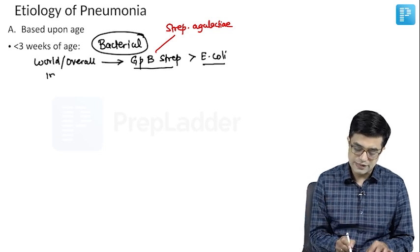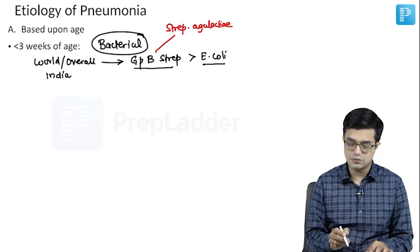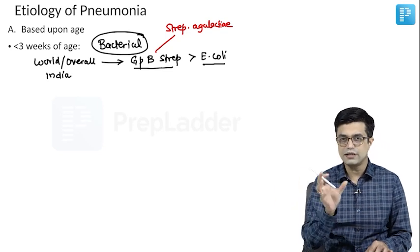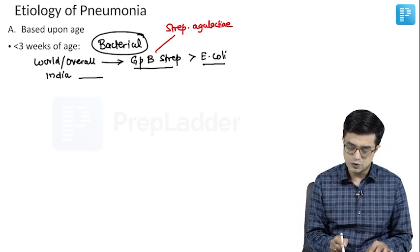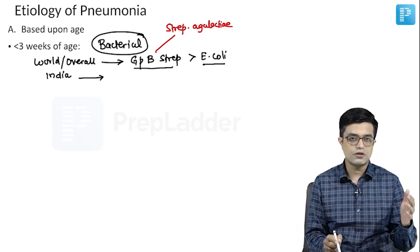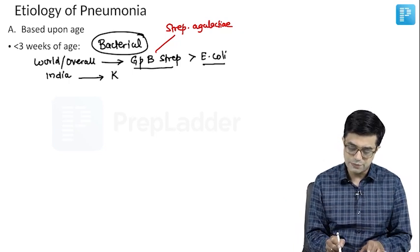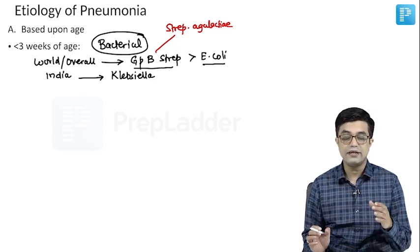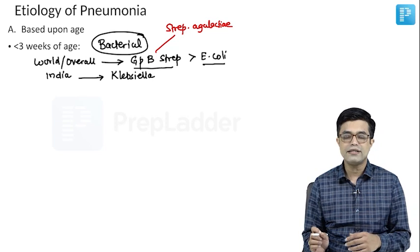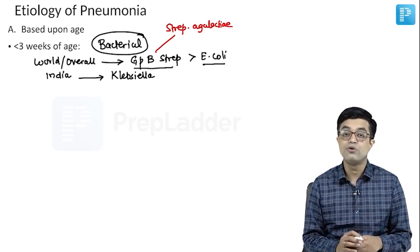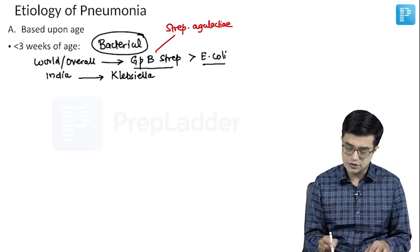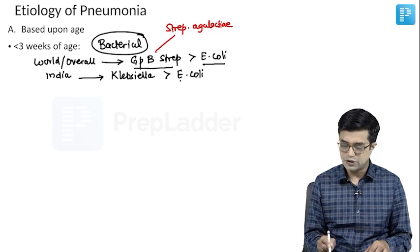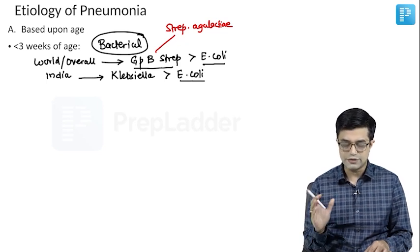When the question says specifically about India, Nelson does not talk about India, so some data comes from the Indian setting. In India, the most common cause is similar to the causes of neonatal sepsis. Klebsiella is the most common cause of bacterial pneumonia in less than three weeks, as bacterial pneumonia in neonates is usually synonymous with neonatal sepsis. Klebsiella is first, followed by E. coli — E. coli is second in both world and India.